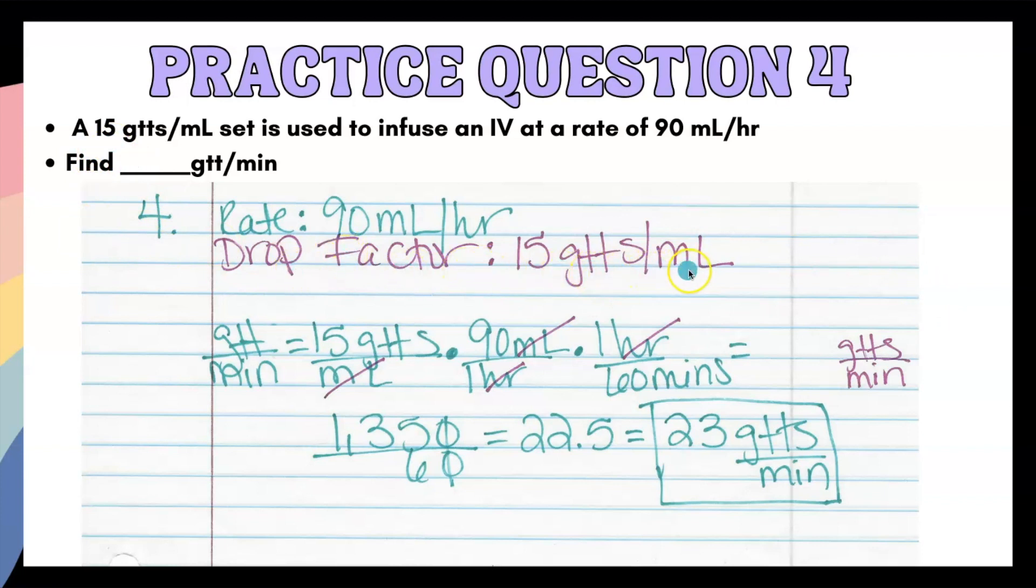What information do we have? We have a drop factor of 15 drops per milliliter and we are infusing at a rate of 90 mls per hour. So always set up your problem. Drops over minute. 15 drops is married to one milliliter. We need to cross out milliliters. 90 milliliters is married to one hour. One hour, we need to cross out hours. One hour has 60 minutes in it. And now we have the correct units of measurements. 135 divided by six is 22.5. This is five and above you round up. So you round to 23 drops per minute.